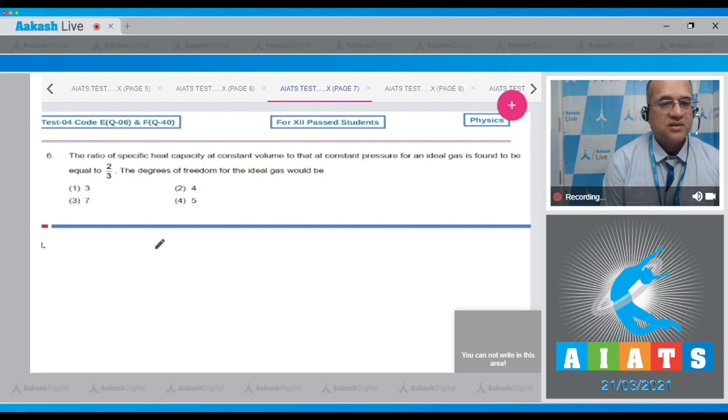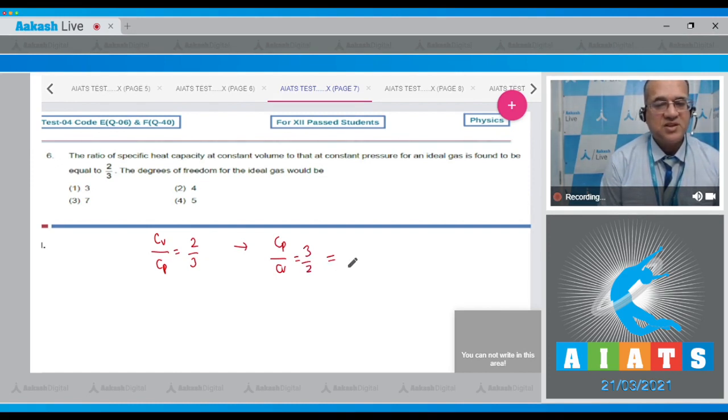It is given that the specific heat at constant volume to the specific heat at constant pressure, which is also equal to molar specific heat, is equal to 2/3. Therefore, Cp/Cv is equal to 3/2. And Cp/Cv is equal to 1 plus 2/f, where f is called the degree of freedom.